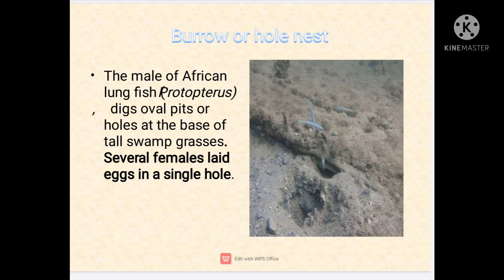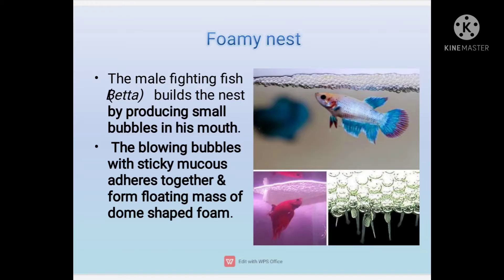The next is the burrow or hole nest. The male of the African lungfish digs an oval pit or hole at the base of tall swamp grasses, where several females lay their eggs in a single hole.